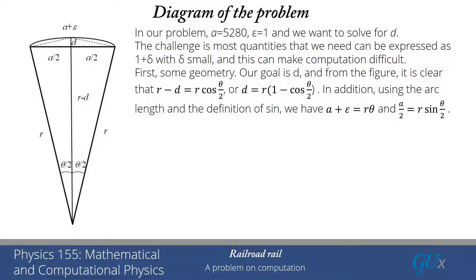We've found what D is. All we need to do is determine both R and theta, which have not been determined for us, but those are going to be functions of epsilon and A.